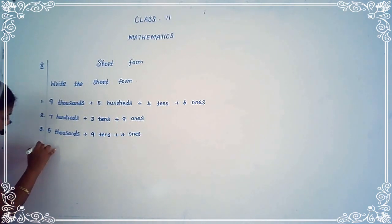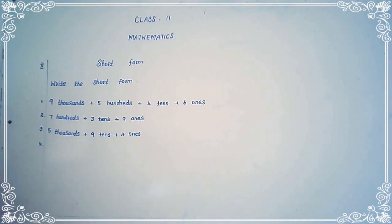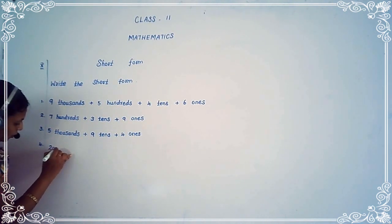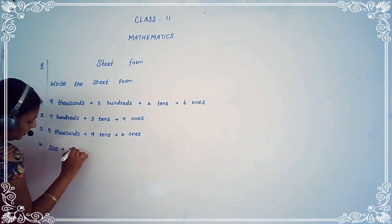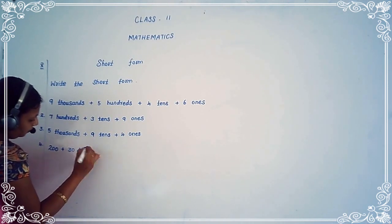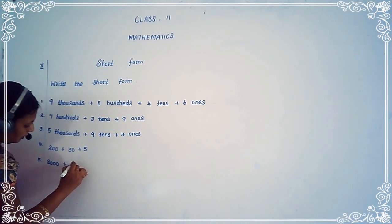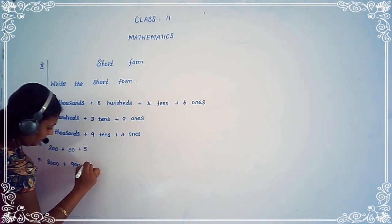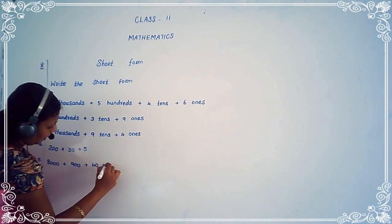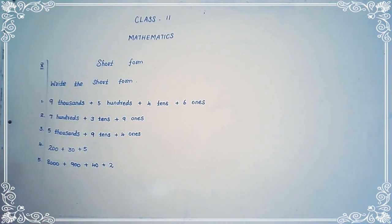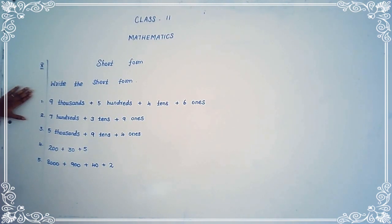The fourth one: 200 plus 30 plus 5. The fifth one: 8,000 plus 900 plus 40 plus 2. Now let us write the short form for the expanded form given below.